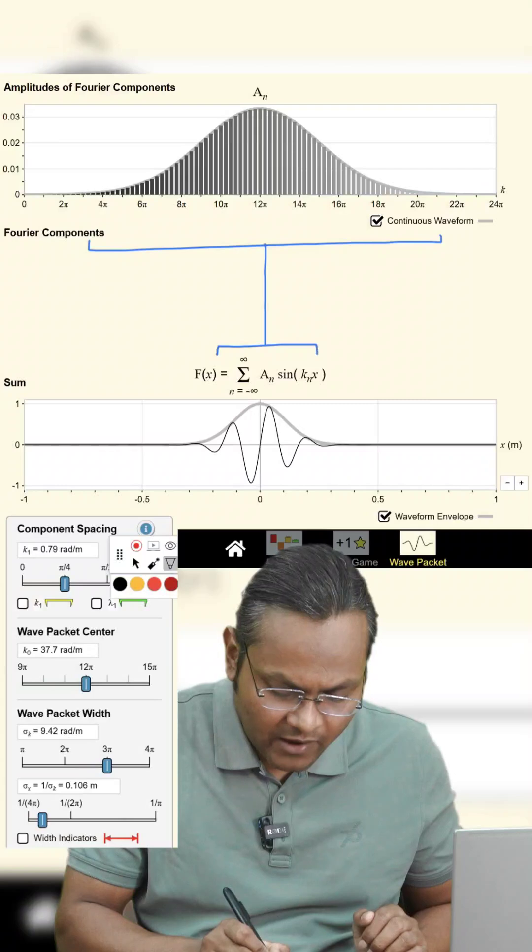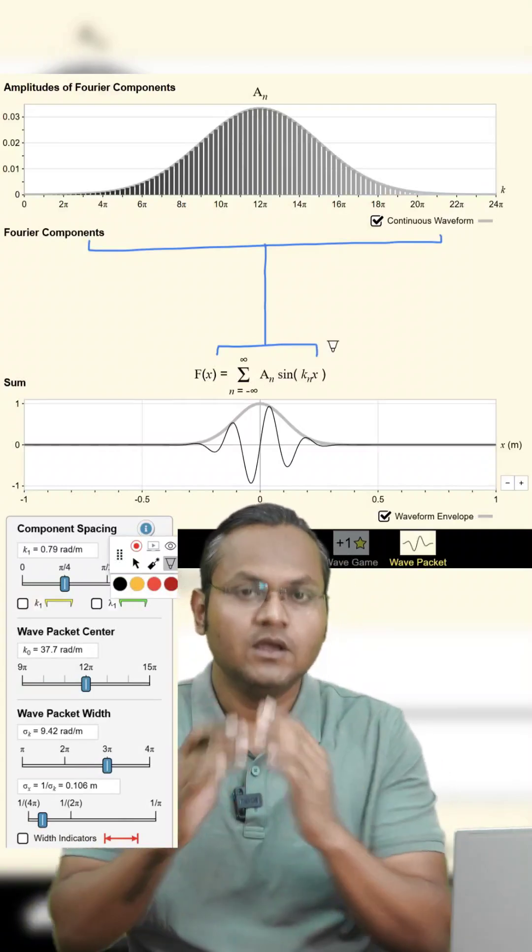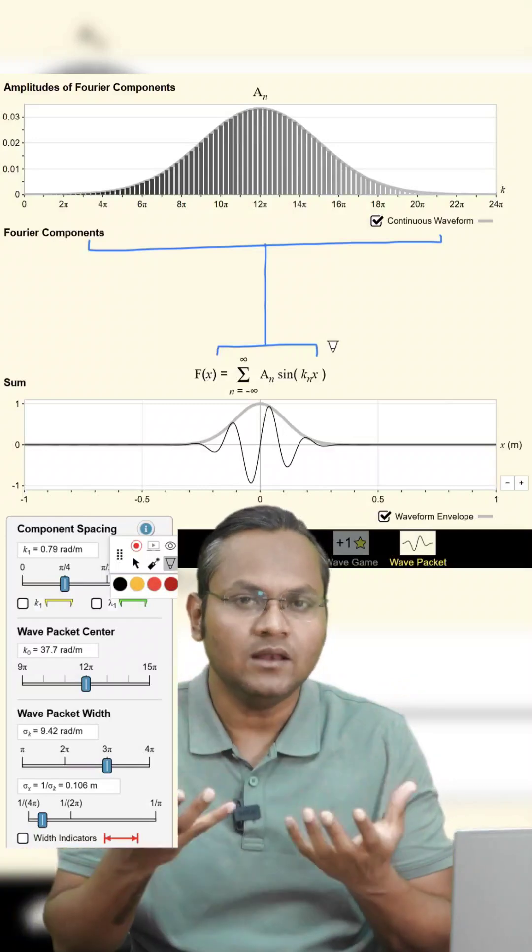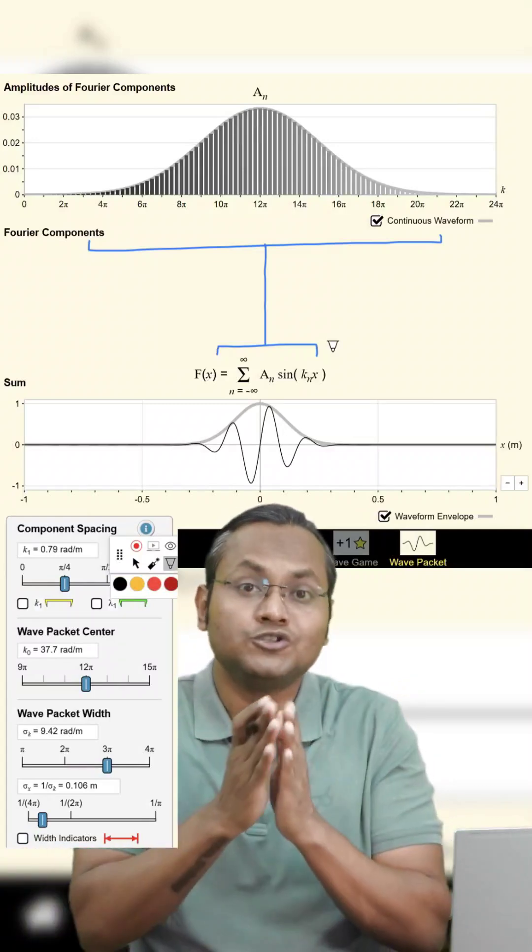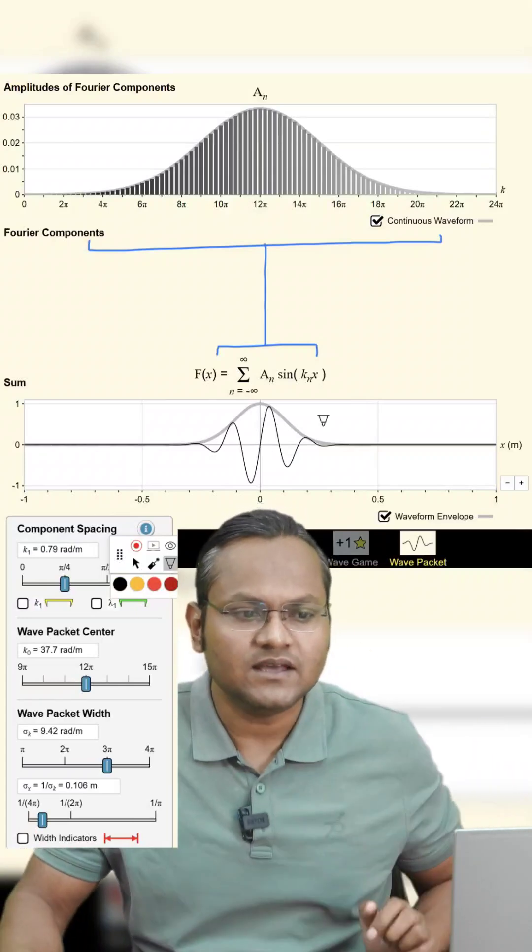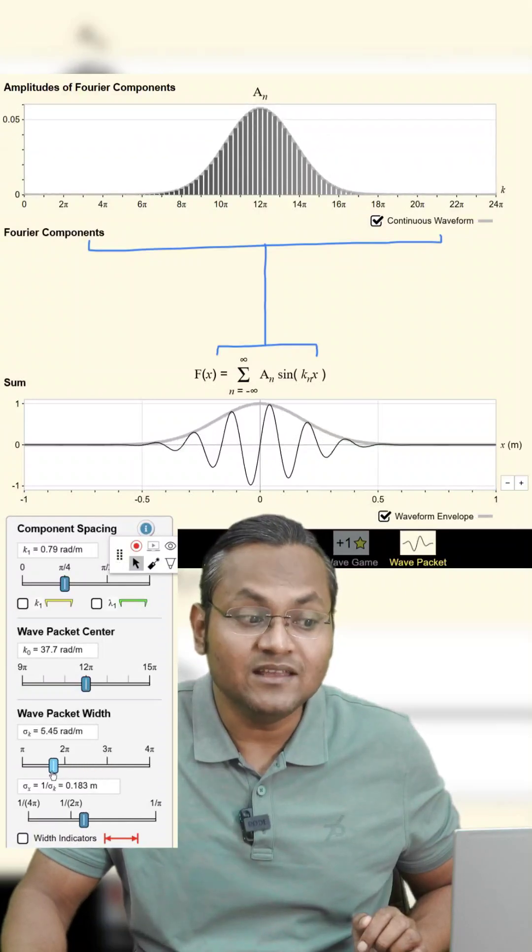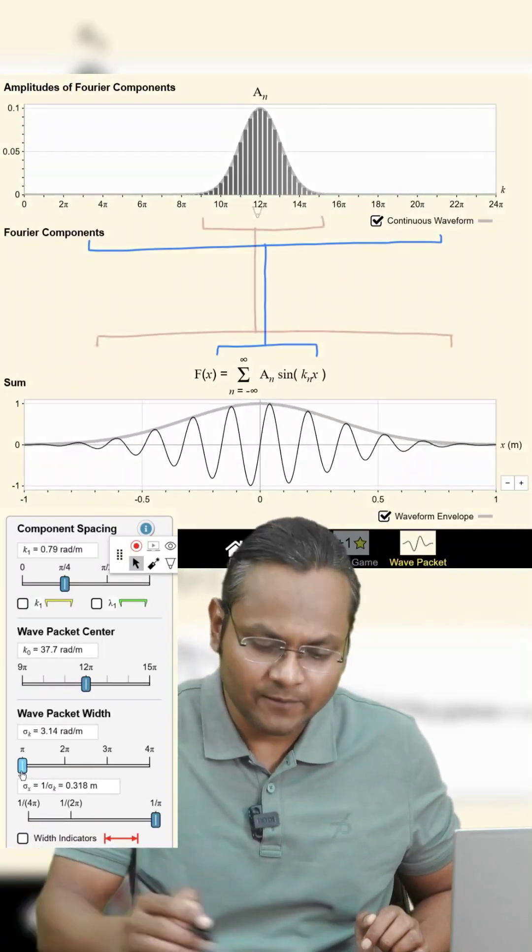Because if I want to create a singular wave packet of very small width I will require not only a large number of sine waves but also a greater range of sine waves. If I decrease the range, then the region in which they constructively interfere is going to increase. You see this? What is happening?